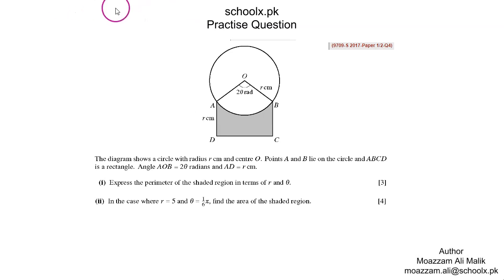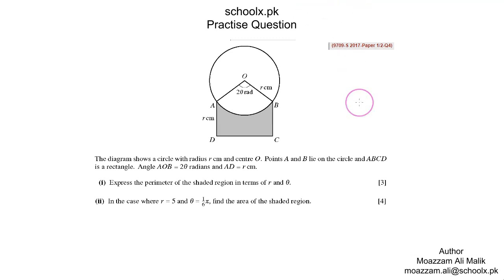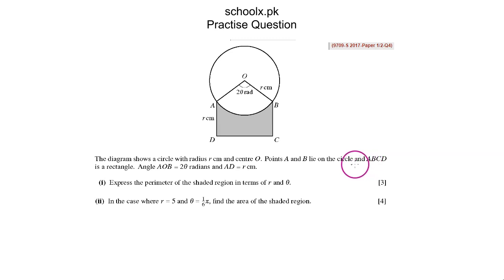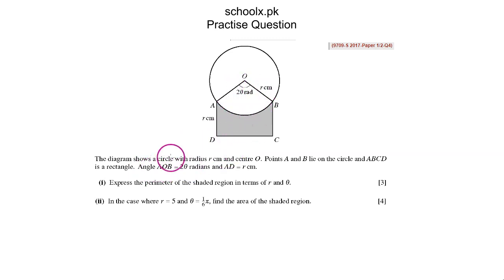In this question, we are given a figure in which some area is shaded and the rest is not. The diagram shows a circle with radius R centimeters and center O. Points A and B lie on the circle, ABCD is a rectangle, angle AOB equals 2θ radians, and AD is R centimeters. The first part asks us to express the perimeter of the shaded region in terms of R and θ.